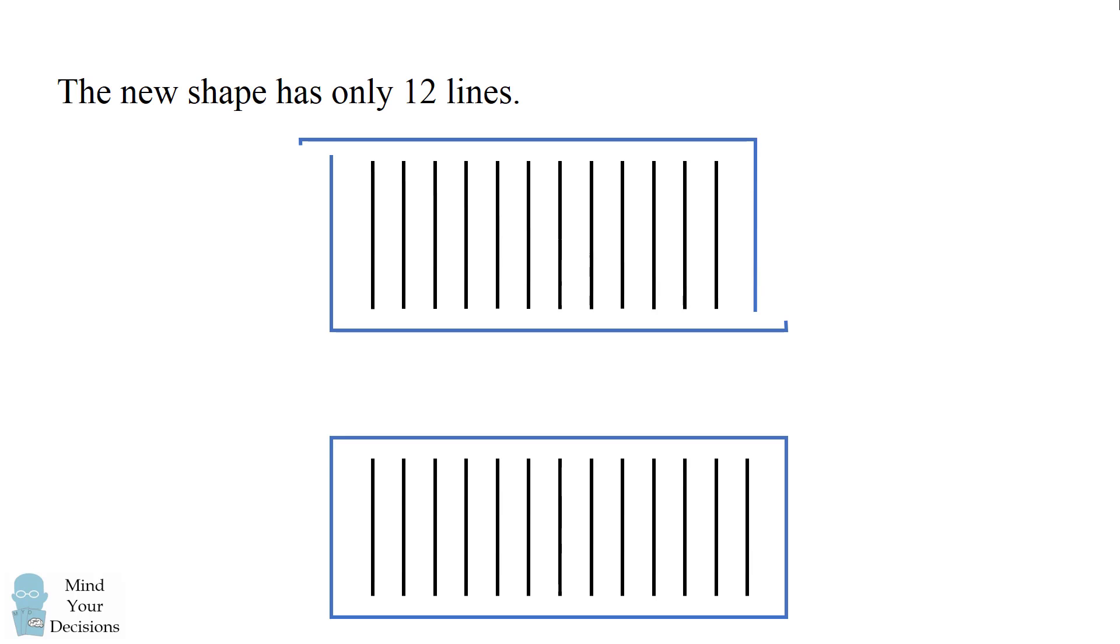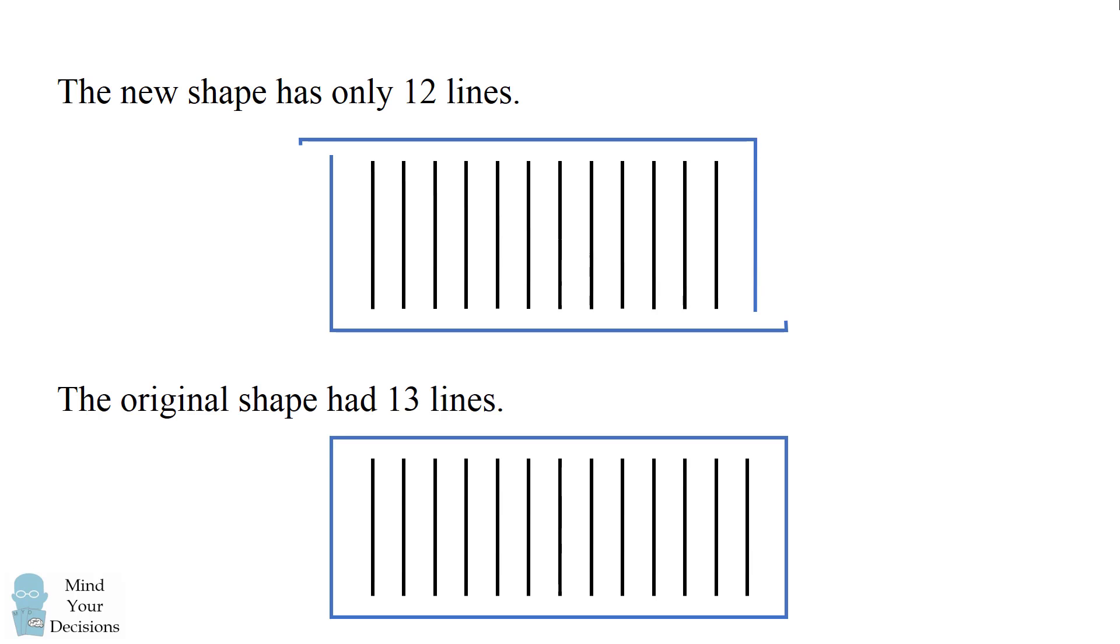So I'm telling you the new shape has 12 lines, and the original shape had one extra line with 13 lines. And it appears that all of the lines are of the same length. But that, in fact, is the issue.